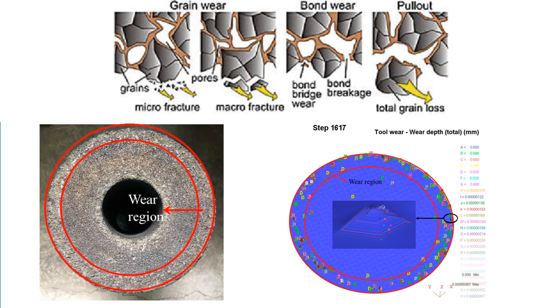In attritious wear, there is dulling of the individual grains resulting in flat spots and dulled edges. Finally, in bond fracture, the individual grains are pulled out of the bond material, and this depends on the wheel grade and other factors.